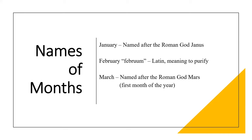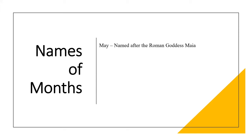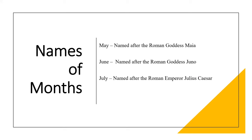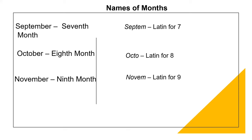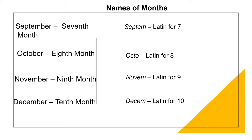The month of April was named after the Roman goddess Aphrodite. May was named after the Roman goddess Maya, and June was named after the Roman goddess Juno. July was named after the Roman emperor Julius Caesar, and August was named after the Roman emperor Augustus. The next four months were given the names of numbers. Because March was the first month of the year, August was the sixth month. September was the seventh month, named after the Latin word septum meaning seven. October was named after the Latin word octal, meaning eight. November was named after the Latin word novum, meaning nine. And December was named after the Latin word decim, meaning ten.